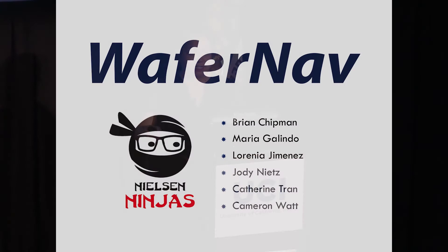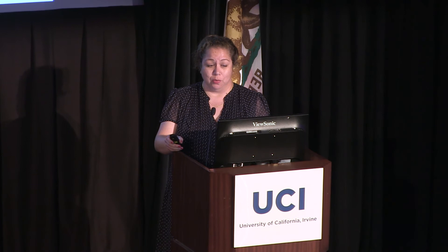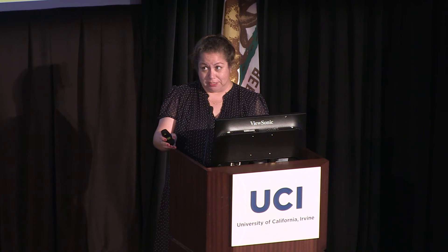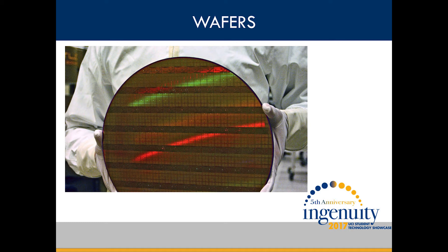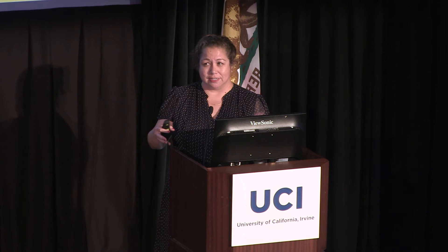My name is Maria Galindo. I'm a member of Nielsen Ninjas. We partnered with Astronix Test Systems, a test and measurement systems provider here in Irvine, and together we developed a wafer tracking system. It's in two parts: WaferNav is our mobile app, and Activate WaferNav is our desktop cell controller. Wafers are thin slices of semiconductor material used to create integrated circuits, used in devices like cell phones and laptops. They must be tested, and Astronix has tested over 9 billion devices over the last 20 years. They batch wafers into lots, and the testing system can get complicated with many operators moving many lots to multiple test stations.